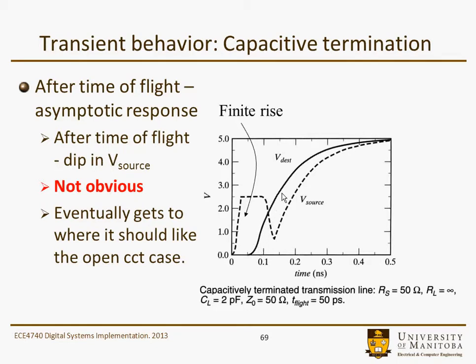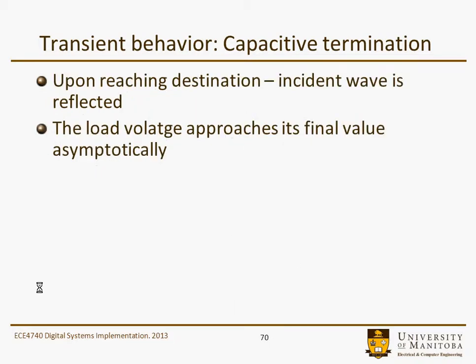One of the things that we notice here is that on the source, there's a dip in the voltage even though it was a matched load. As in the previous slide, if we looked at the source voltage, it would have immediately gone to 5 volts. This is not obvious, but it eventually gets to where it should be, and there's a bit of discussion on the following page as to why that might be the case.